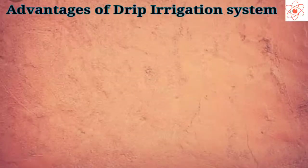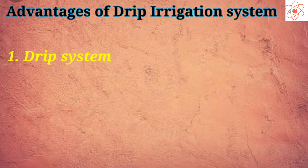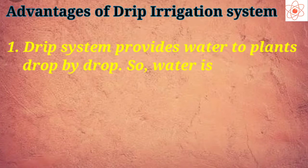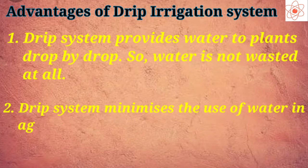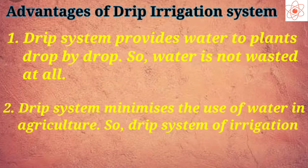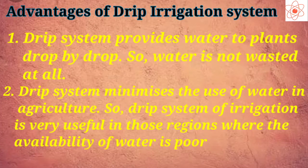Now, let us see the advantages of the drip irrigation system. First, the drip system provides water to plants drop by drop, so water is not wasted at all. Second, the drip system minimizes the use of water in agriculture, so drip system of irrigation is very useful in those regions where the availability of water is poor.